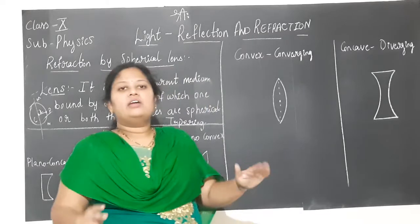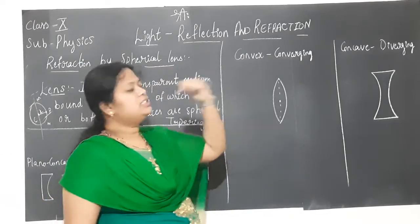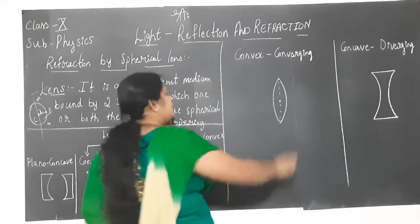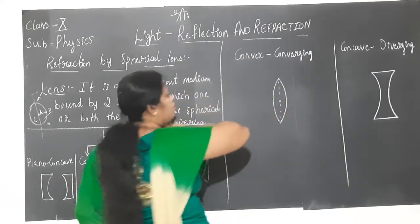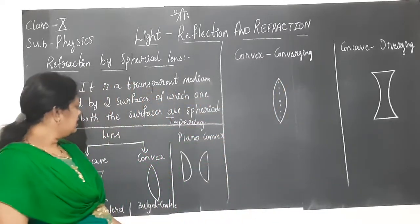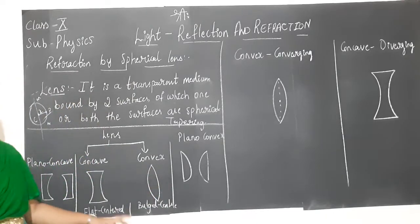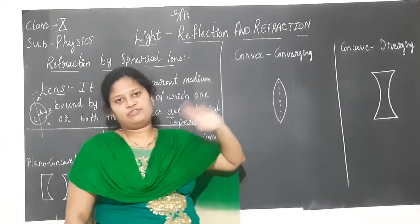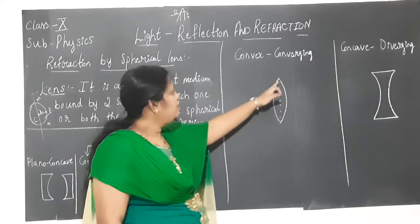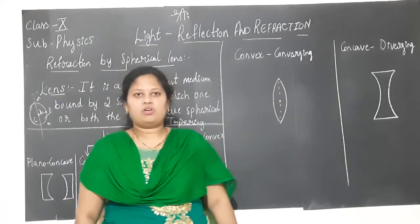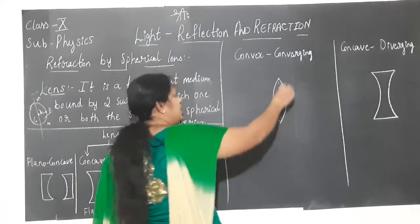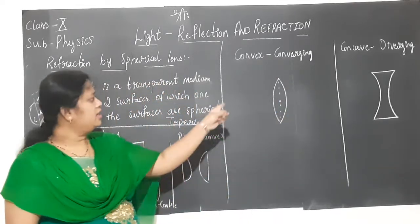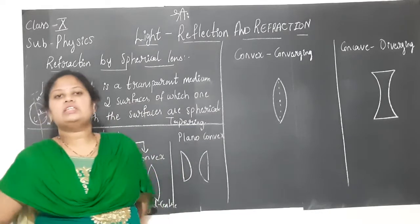Now we will understand how a lens converges or diverges with the help of a ray diagram. First, I will show you with respect to the convex lens. Draw the convex lens representation neatly using a dotted line with the help of a scale — that is the representation of the convex lens.